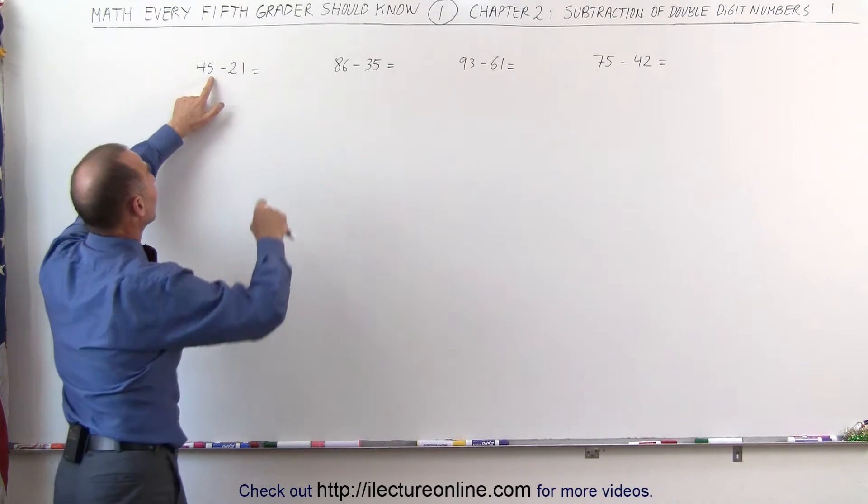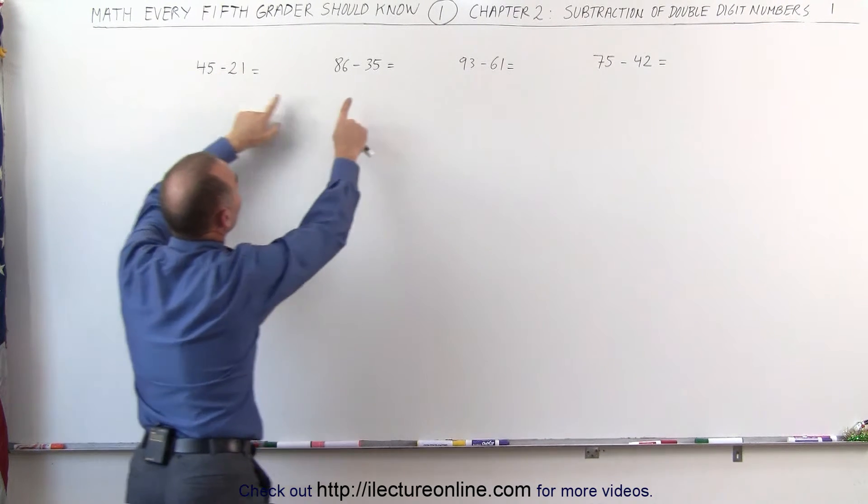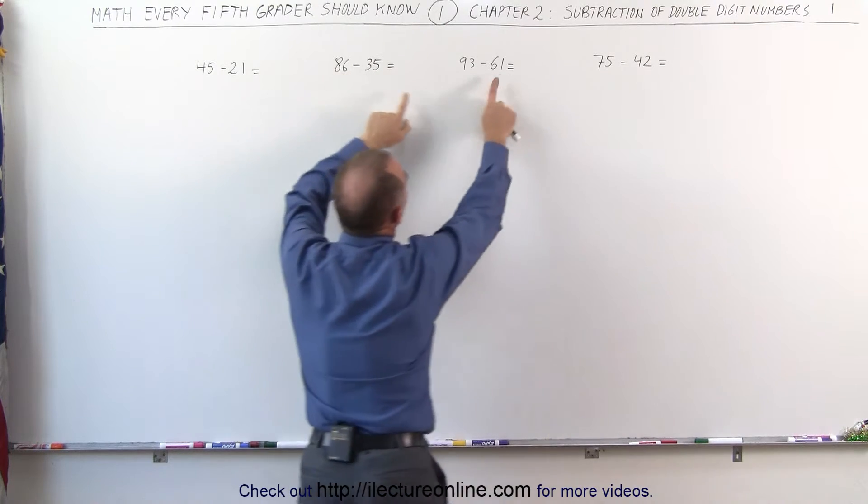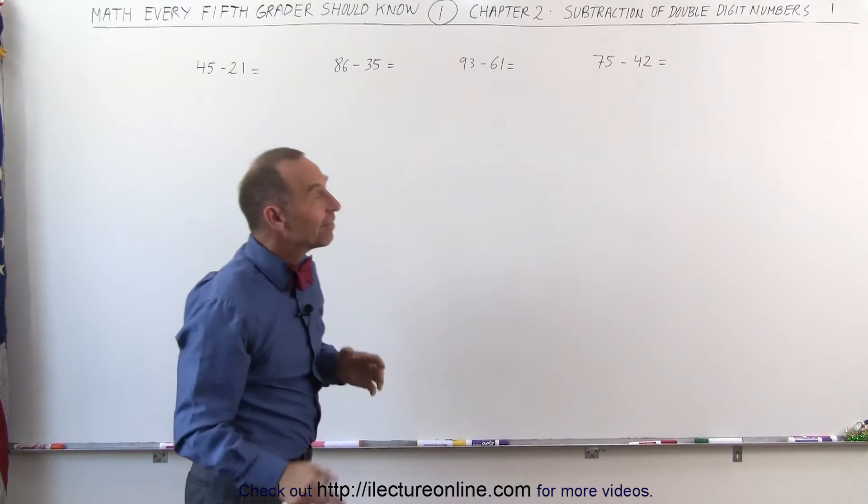If you look carefully, notice that the last digits on each number, this one is smaller than that, this one is smaller than this, this one is smaller than that, and 2 is smaller than 5. That makes it easier.